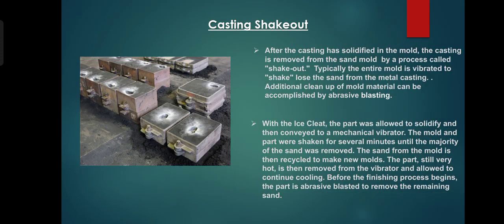And then after all this, casting shake-out. In these pictures are the casting shake-out of that material. After the casting has solidified in the mold, the casting is removed from the sand mold by a process called the shake-out process. Typically the entire mold is vibrated to shake loose the sand from the metal casting. Additional cleanup of mold material can be accomplished by abrasive blasting.